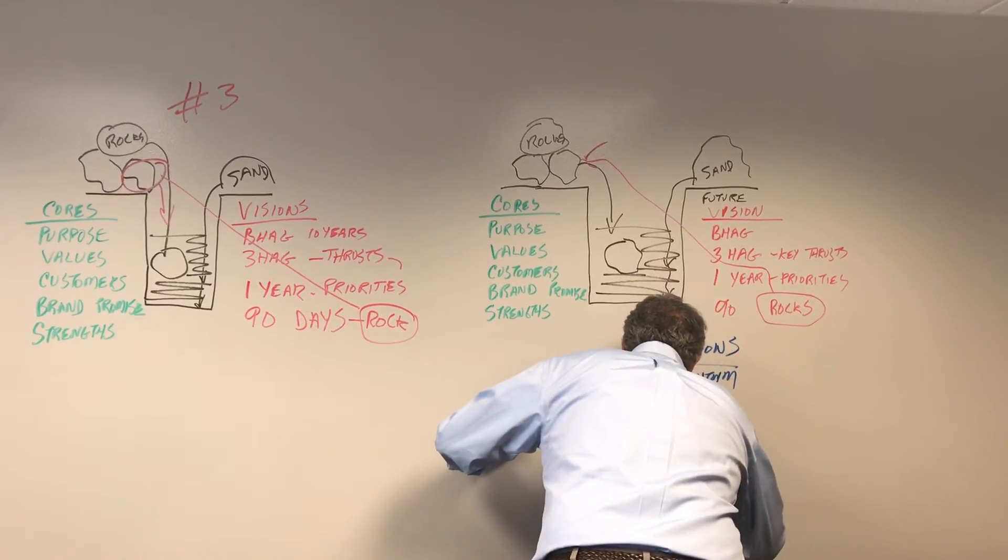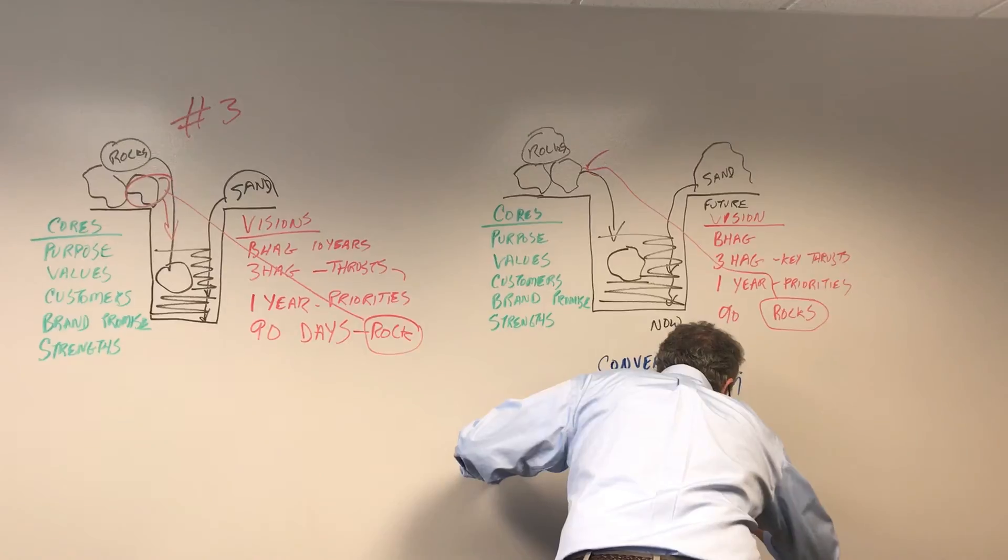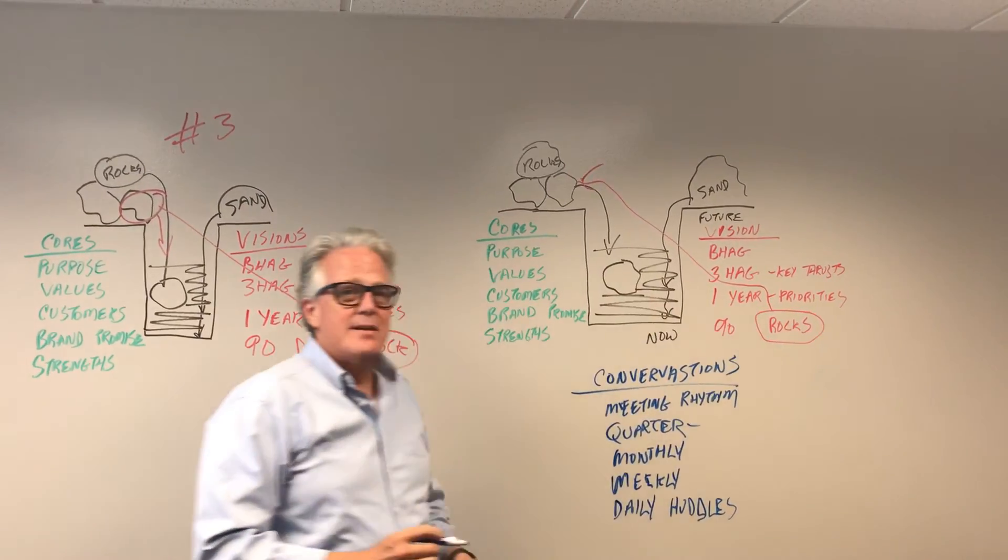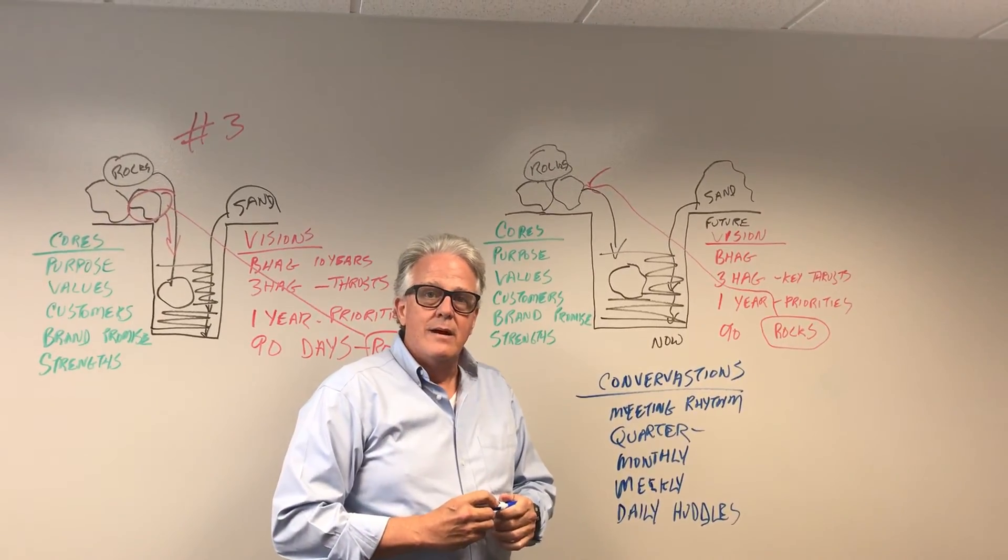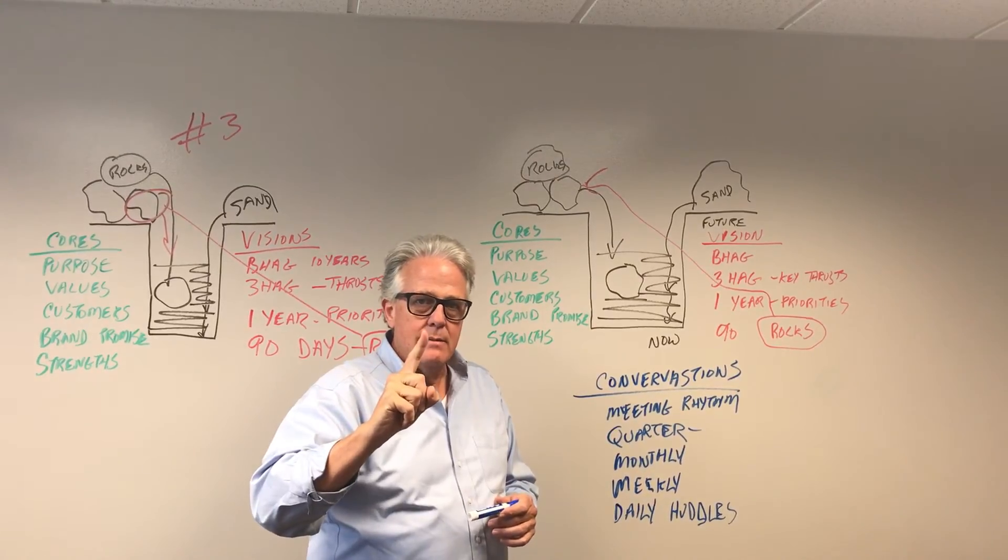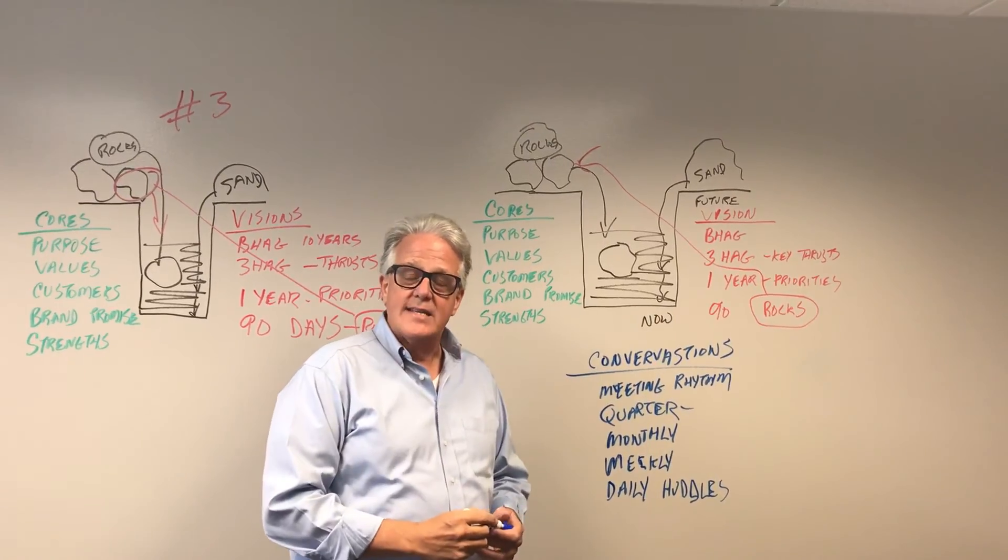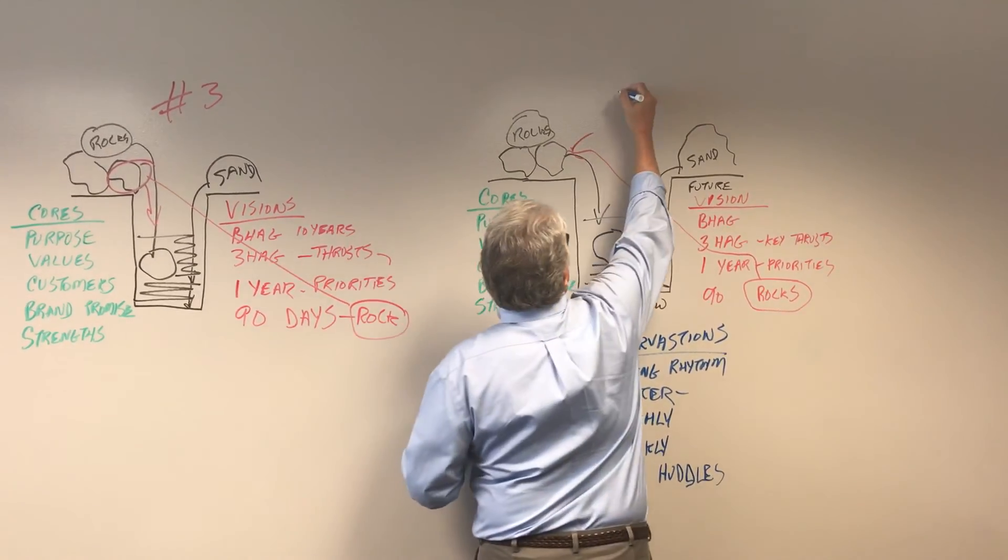Finally, you have to have daily conversations or daily huddles, five to ten minute meetings every day where the team talks about what's the main thing they got to get done today and inform each other so that people can move fast and make good decisions faster and better. This is the final step.